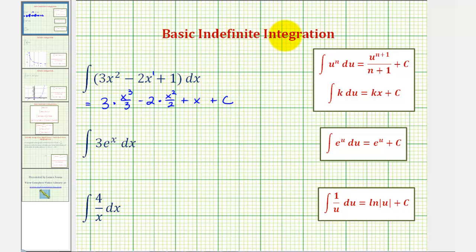So when we find an indefinite integral or find an antiderivative, we're finding a family of functions that have a derivative of the integrand or a derivative of three x squared minus two x plus one. So let's go ahead and simplify this. Notice here the threes simplify to one and so do the twos, leaving us with x to the third minus x squared plus x plus c.